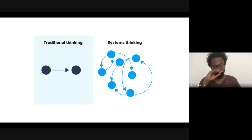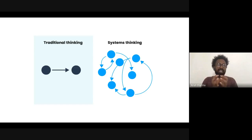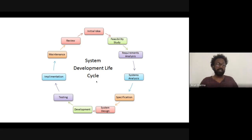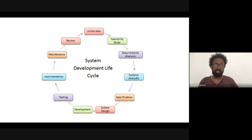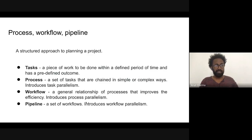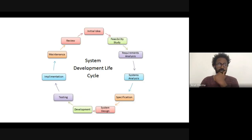It's all about efficiency. You could do the same thing, but the traditional way might take a year to develop a platform. With a proper software development system it might take just two months or less. At many levels you reduce complexity and grow by giving it structure. This comes from systems theory. There is an initial idea, feasibility study, requirement analysis, system analysis, specification, system design, development, testing, implementation, maintenance, and review — they have a certain cycle and can also be cyclic between each other.